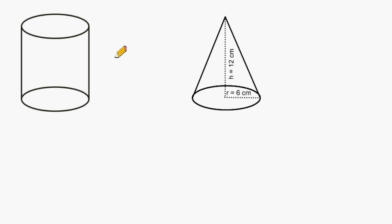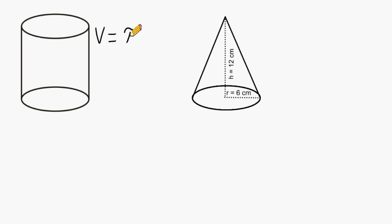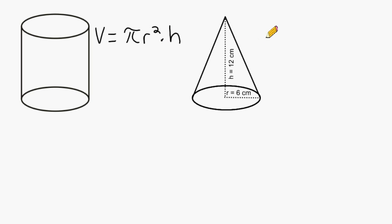In this tutorial, we are going to practice finding the volume of a cylinder as well as a cone. To find the volume of any cylinder, what we do is we find the area of the cylinder's base, which is a circle, and that can be expressed as pi times radius to the second power, and then we multiply the resulting area by the height of the cylinder, and that will give us our volume.